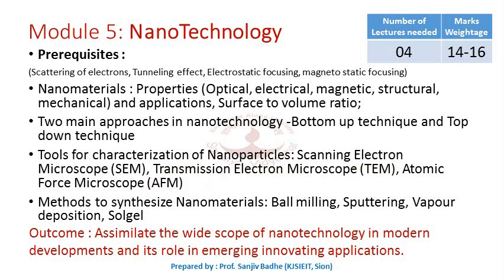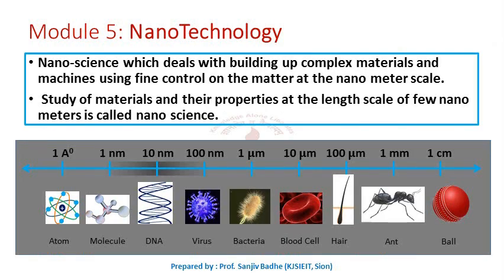In 1959, Nobel laureate Richard Feynman presented an idea of building materials atom by atom, and this idea evolved into a new branch of science called nanoscience. Nanoscience deals with building up complex materials and machines using fine control on matter at the nanometer scale. In nanoscience we study properties of materials having a length scale of the order of a few nanometers.